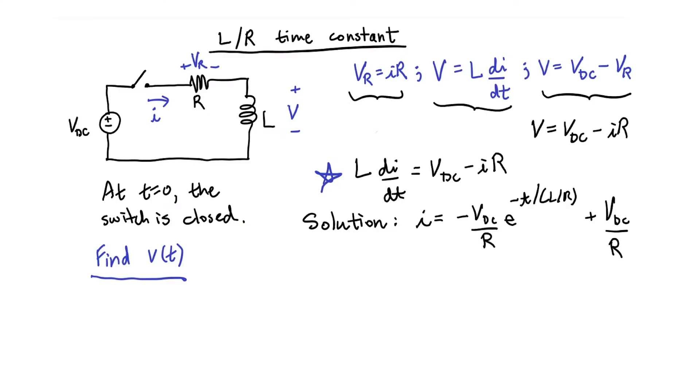If we want to find the voltage with respect to time, we can just plug it into this equation. V then equals, after some simplification, Vdc e to the minus t over L over R. And if I graph that, then I just get exponential decay.